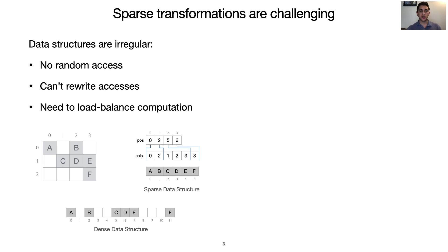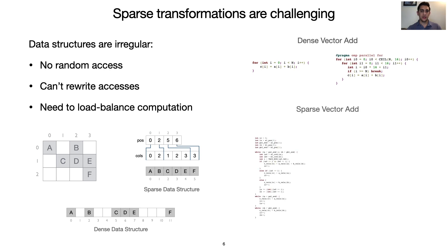Additionally, the complexity of the sparse structures lead to much more complex code. Consider the simple example of adding two vectors. When these vectors are dense, the code is very simple and transforming this code for parallelization is straightforward. When the vectors are sparse, however, the code is much more complex and includes multiple while loops. Transforming this code for parallelization is non-trivial due to the lack of random access. The transformed code contains multiple binary searches and additional loop conditionals.